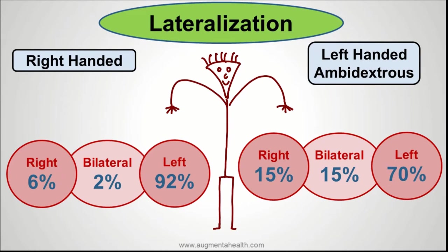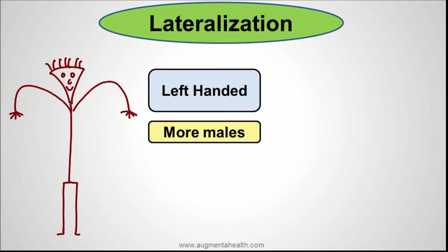Coming on to left-handed or ambidextrous people, you would see the left side of the brain being 70% dominant. The right side of the brain is a little higher at 15%, compared to 6% in right-handed people. The bilateral representation is also higher at about 15%. It is also interesting to note that there are more males who are left-handed.